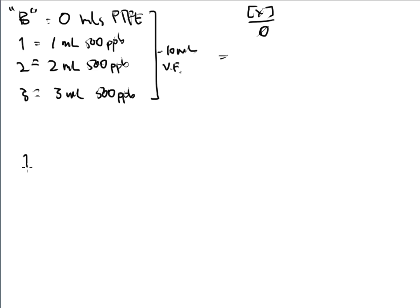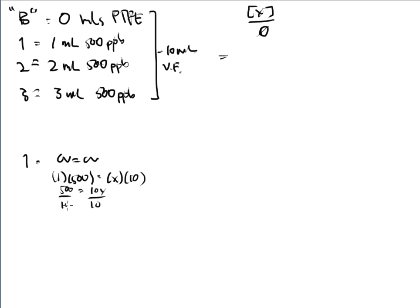For spot number one, it's normal sample prep using C₁V₁ = C₂V₂. I took one milliliter of a 500 ppb solution and diluted it to 10 milliliters. So: 1 × 500 = 10 × X, divide by 10, and I get 50 ppb. The concentration of the first flask is 50 ppb.